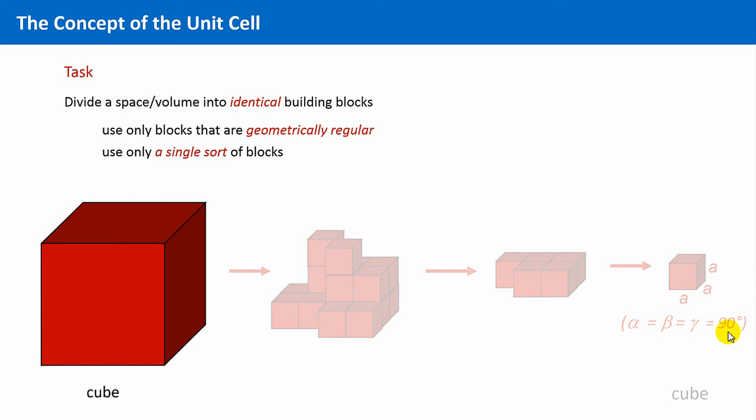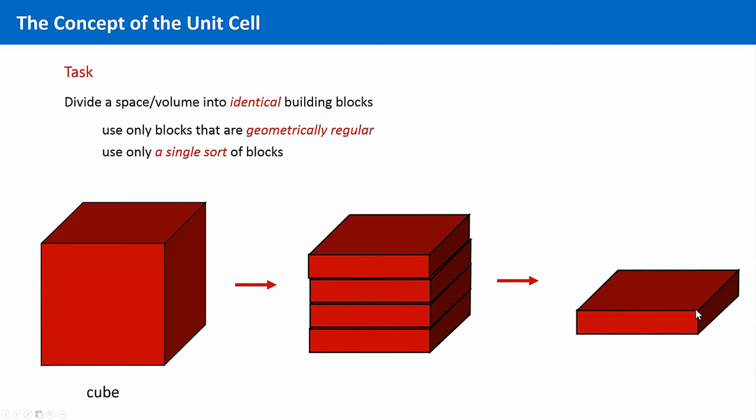This is of course not the only possibility. Another possibility is to slice this big cube into horizontal slices, or vertical slices, that would be the same in the end. And this results in these thin square plates as building blocks. As in the case before, with orthogonal faces, all angles are 90 degrees, but now with a square basal plane and rectangular lateral planes.